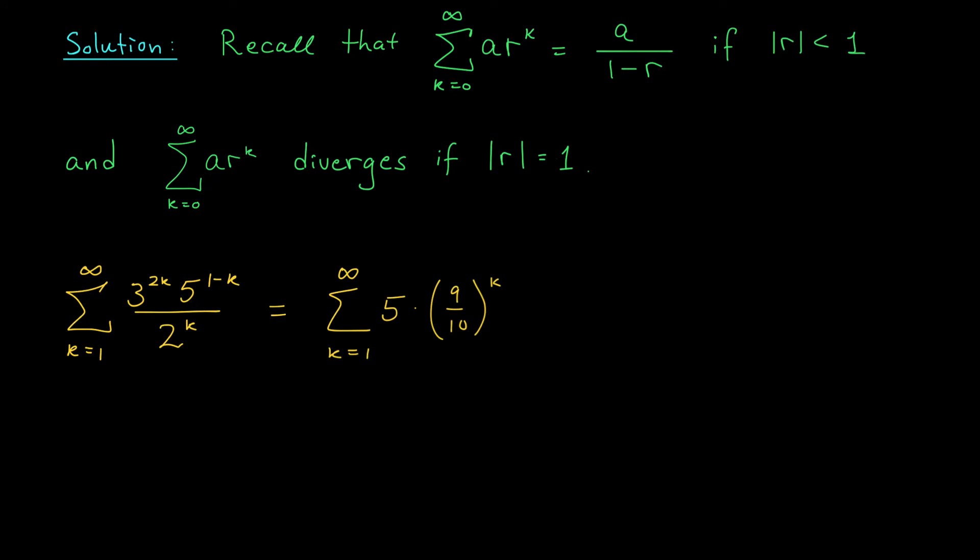Okay, after a bit of work, we've managed to rewrite our series to more closely resemble the geometric series given above. From this form, we can see that we have a common ratio of 9 over 10. And since this is less than 1 in absolute value, our series is going to converge.